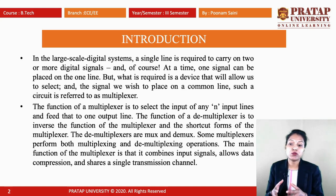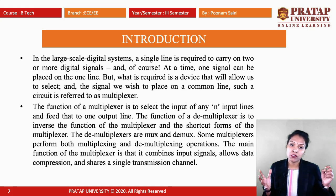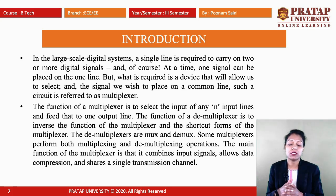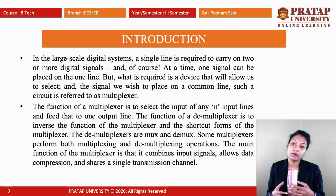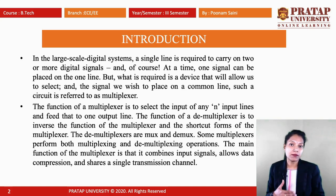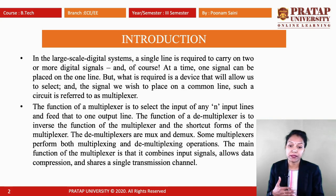A multiplexer has n input lines and feeds them to one output line — that means many inputs are converted into a single output. The function of a demultiplexer is just opposite to that of a multiplexer. The shortcut forms are mux and demux respectively. Some multiplexers are capable of performing both multiplexing and demultiplexing operations.